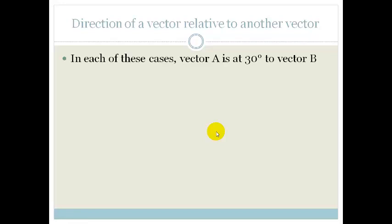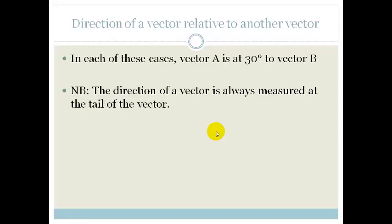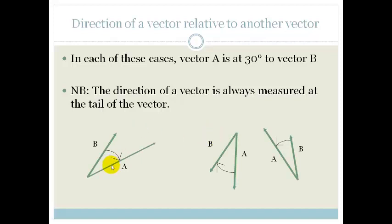Now, finally, we have a direction of a vector relative to another vector. In each of the following cases, the vector A is 30 degrees relative to vector B. So, do you see it doesn't matter which way the vectors are pointing, we're always saying that the angle between these vectors is 30 degrees. So, the direction of the vector is always measured at the tail of the vector. So, we're going, that is the direction it's going, that's the direction, and that is 30 degrees.